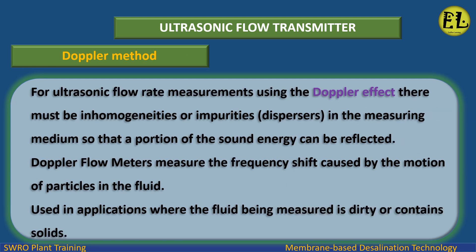Doppler method: For ultrasonic flow rate measurements using the Doppler effect, there must be inhomogeneities or impurities — dispersers — in the measuring medium so that a portion of the sound energy can be reflected. Doppler flow meters measure the frequency shift caused by the motion of particles in the fluid, and are used in applications where the fluid being measured is dirty or contains solids.